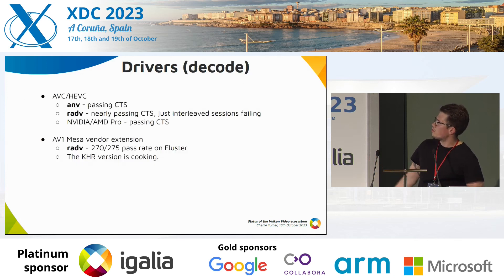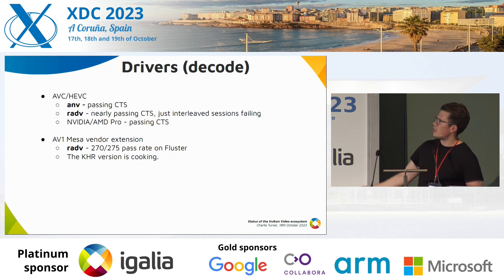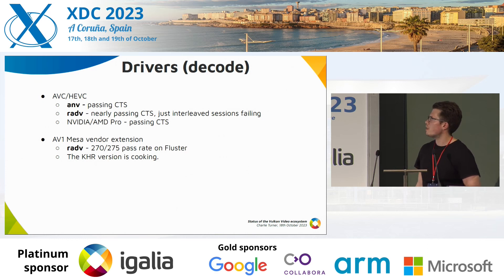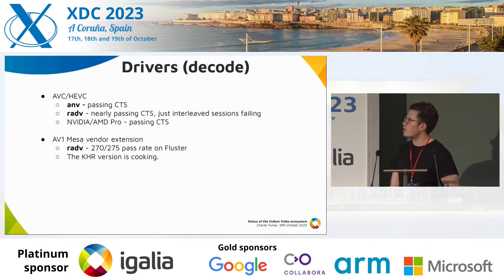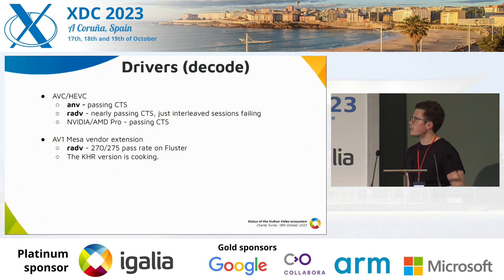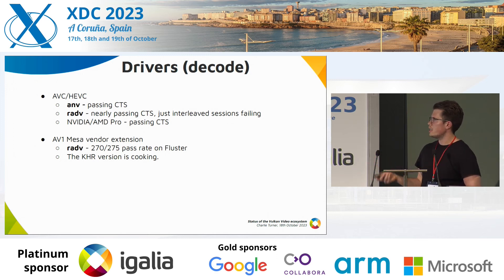In terms of what the drivers look like: for AVC and HEVC, the Intel Anvil driver is completely passing the CTS — looking great. RADV is pretty close, with just one test failing on a pretty weird case. The proprietary drivers from NVIDIA and AMD are passing on Windows and Linux. There's also an AV1 extension in the form of a Mesa vendor extension; the Khronos version is in the works. If you're familiar with the Fluster test suite, there are a lot of quite complicated test cases in there, and for a hardware-accelerated API, getting that kind of pass rate in Fluster is pretty respectable — one of the best pass rates I've seen with the RADV driver.